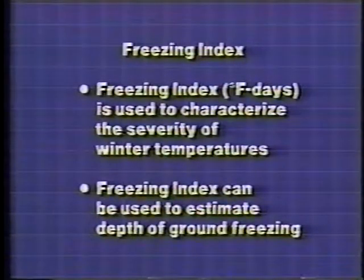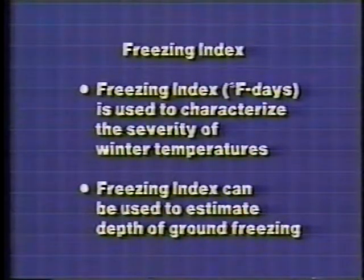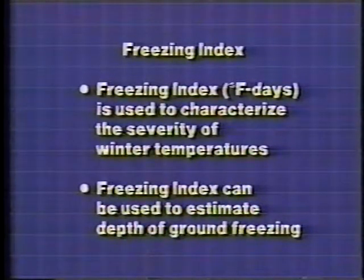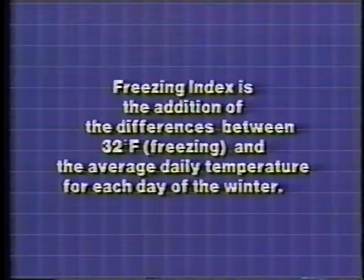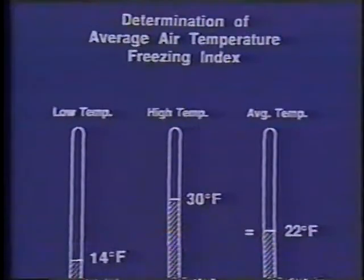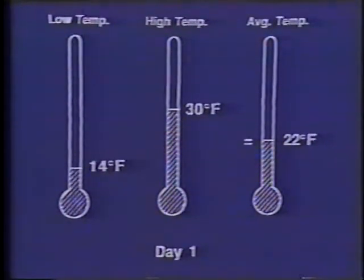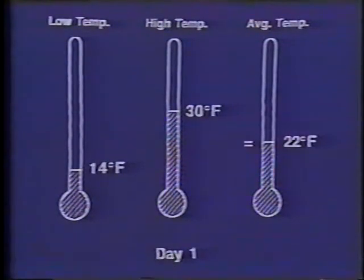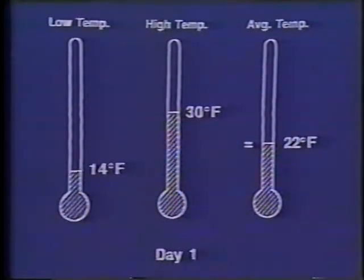The first concept for characterizing freezing and thawing is freezing index. Freezing index is based on air temperature, measured in units of degree Fahrenheit days, and is used to characterize how severe a winter's weather has been. It can also be used to estimate the depth of ground freezing beneath the pavement structure. Freezing index is the addition of the differences between 32 degrees Fahrenheit and the average daily temperature for every day of the entire winter. The average air temperature is the average of the low and high daily temperatures. For our example, on the first day, a low of 14 degrees and a high of 30 degrees result in an average of 22 degrees Fahrenheit.